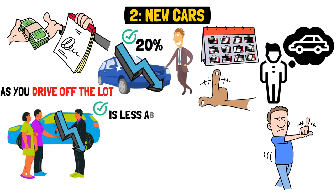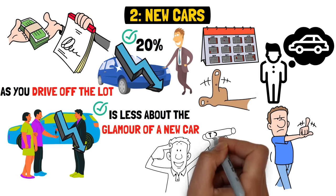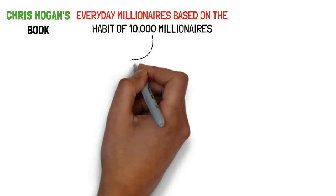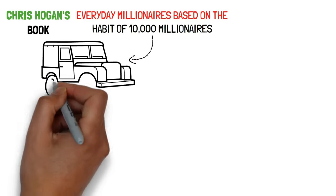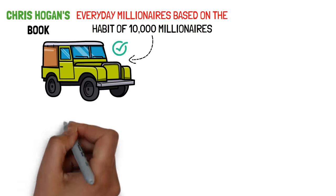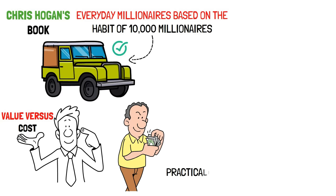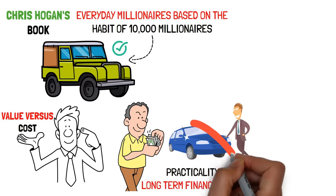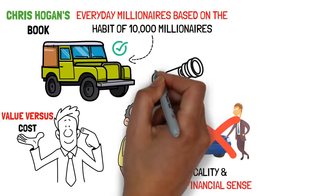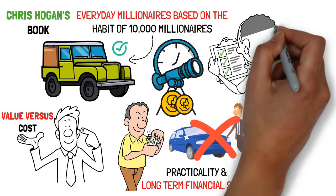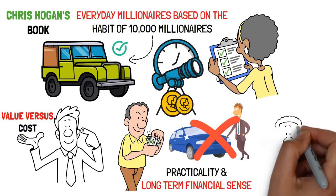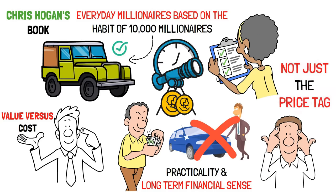This savvy approach is less about the glamour of a new car and more about smart financial planning. In fact, research detailed in Chris Hogan's book, Everyday Millionaires, based on the habits of 10,000 millionaires, reveals that the average millionaire drives a four-year-old car with 41,000 miles on it. This statistic underscores a deeper understanding of value versus cost. Wealthy individuals often opt for practicality and long-term financial sense over the fleeting excitement of a new purchase. It's all about understanding the actual value, not just the price tag.